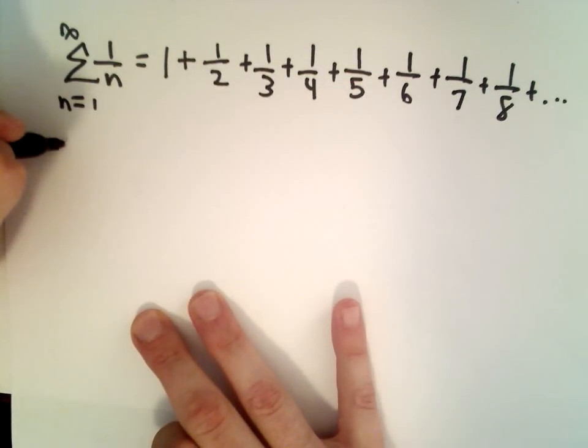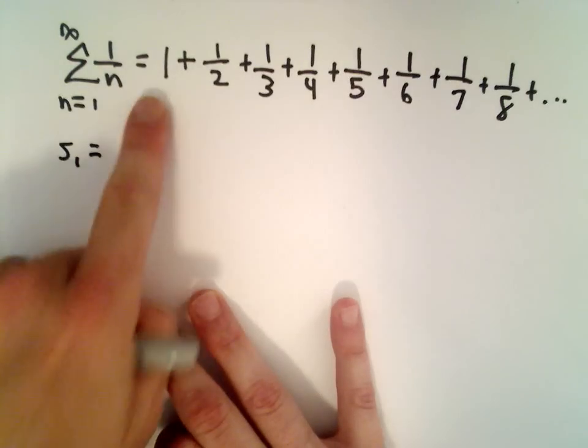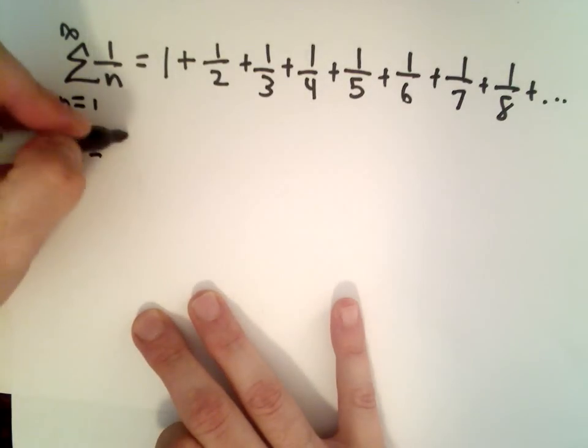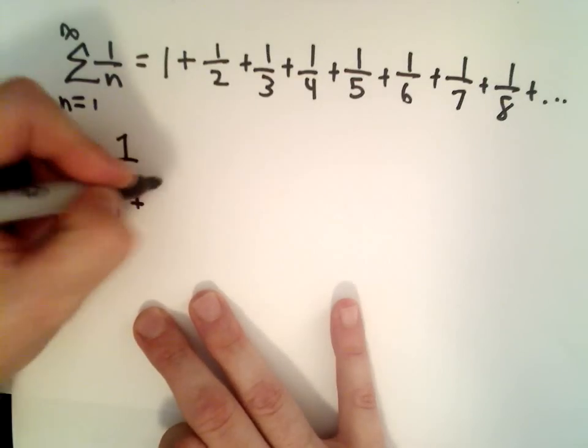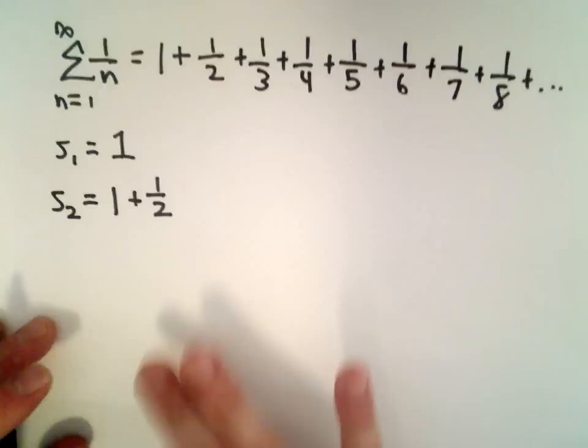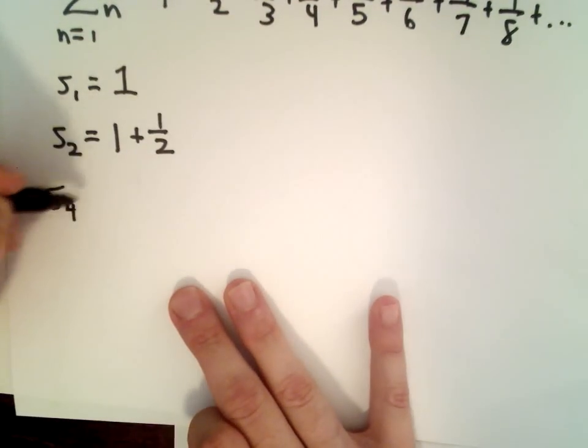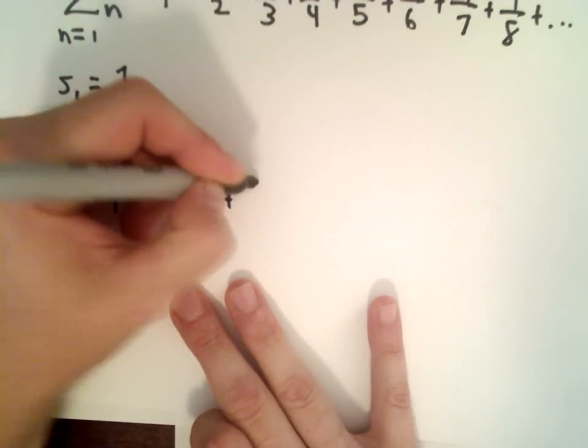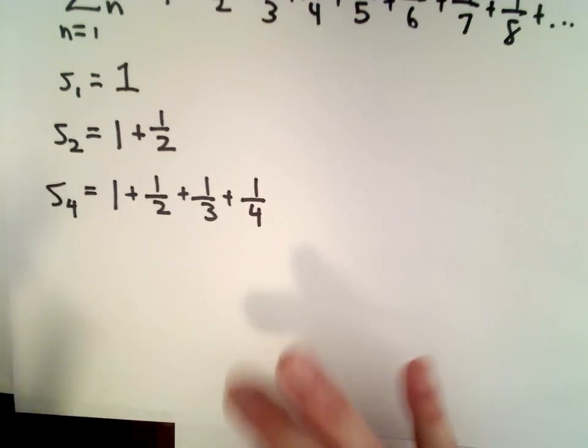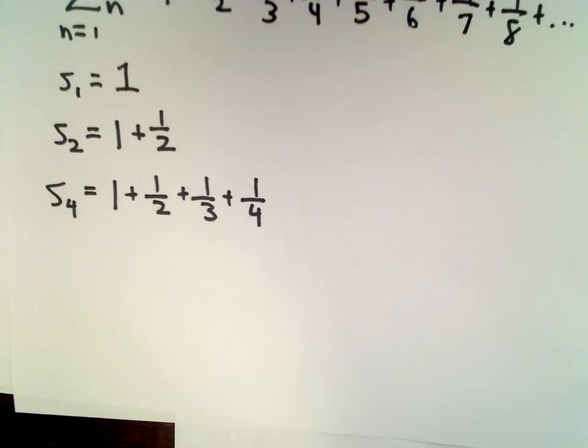We're going to look at partial sums. S sub 1, that's just the sum of the first term, that's just 1. S sub 2 would be 1 plus 1 half. Now I'm going to jump to S sub 4. That's going to be 1 plus 1 half plus 1 third plus 1 fourth. This is where the argument's going to come in.